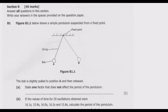Welcome viewers to the second episode in a series focused on the 2020 internal science paper in physics. The first episode covered the multiple choice section. Let us start with question B1 from Section B, where you are expected to answer all nine questions. This section carries 45 marks out of 85, so it is important that you revise these questions, as mastering this section gives you a bigger chance of getting a distinction.